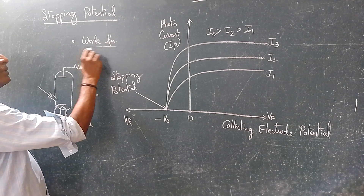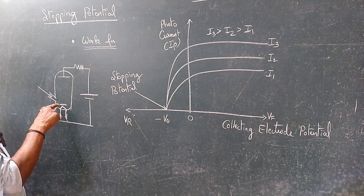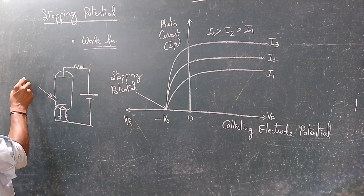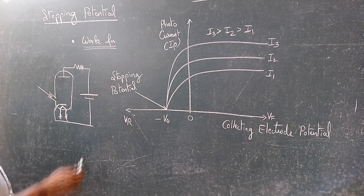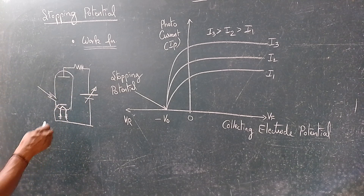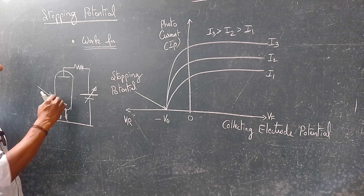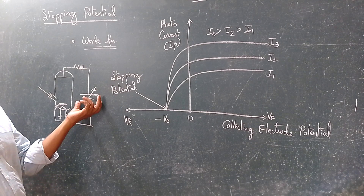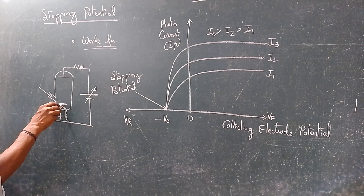Now we define an important term called work function. Work function is the minimum energy required to release an electron from the cathode. Before light is allowed to pass through the opening and touch the cathode, we adjust this voltage so that it is at the threshold of the work function. That means any additional energy given will release an electron. We have adjusted exactly at the work function of the particular material.